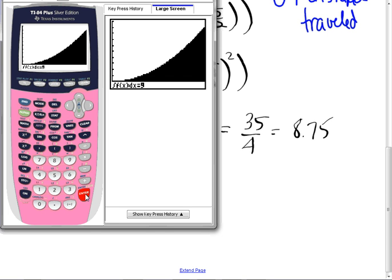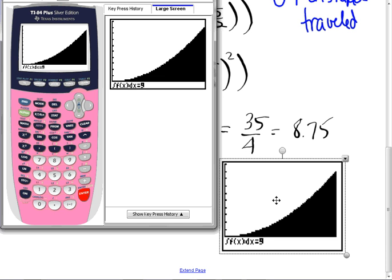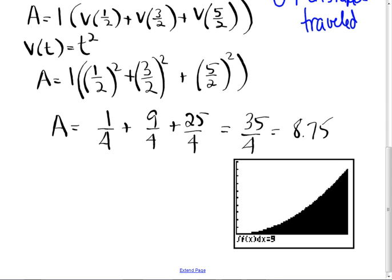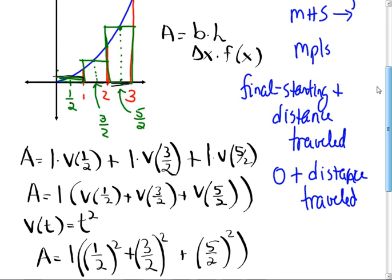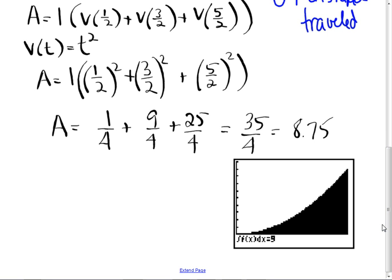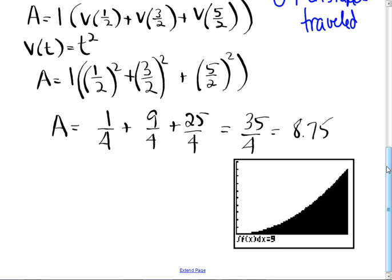We got 8.75 with three rectangles, and the real area is 9. That's not bad. How would we get better? More rectangles. You want an infinite number of rectangles — that's what your calculator is doing. The more you get in there and you take the limit, let N go to infinity, you get the area under the curve. That's what calculus is about: limits.